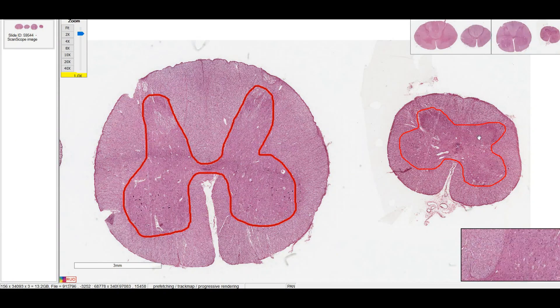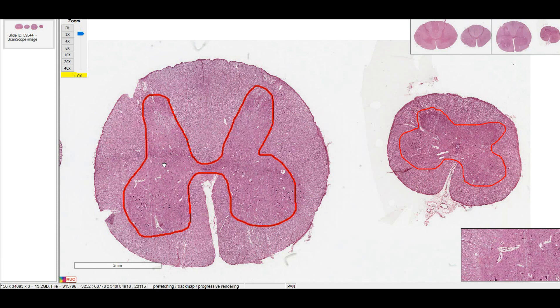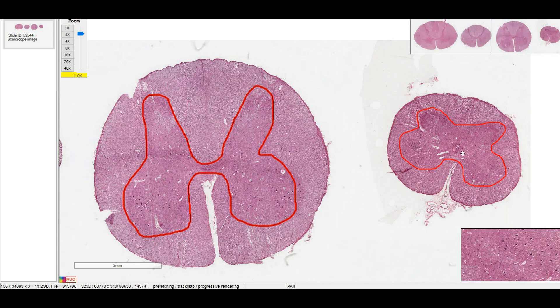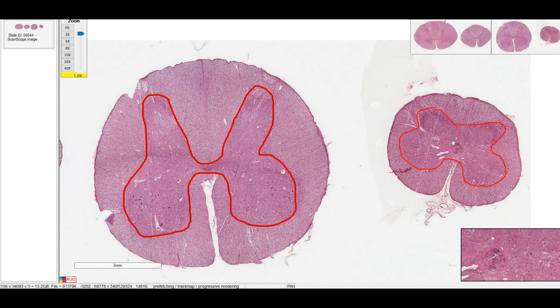If we look at the lumbar spinal cord versus the sacral spinal cord, we can see that there's a much higher ratio of gray matter to white matter compared to the thoracic or cervical. And comparing lumbar versus sacral, that ratio of gray to white is even higher in the sacral spinal cord. And in the sacral spinal cord, there's just a very small cross section in general.